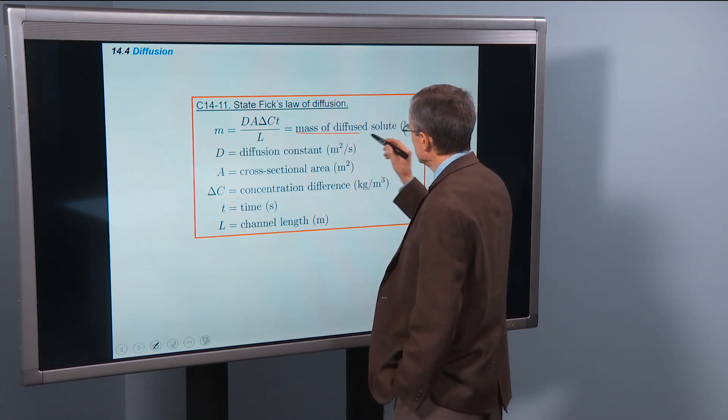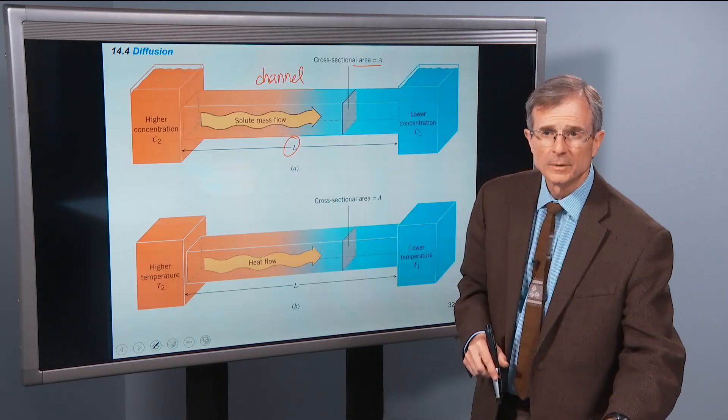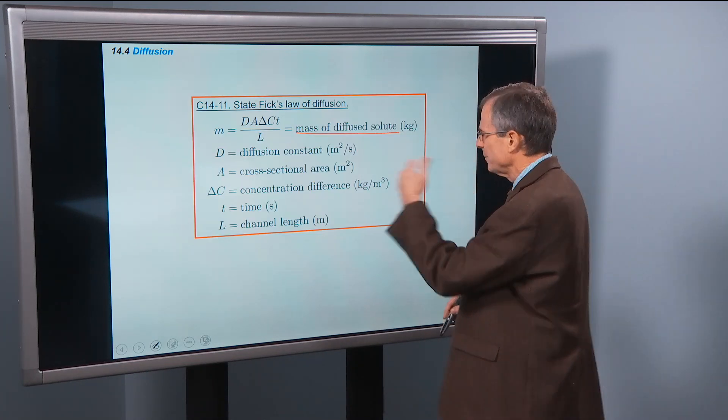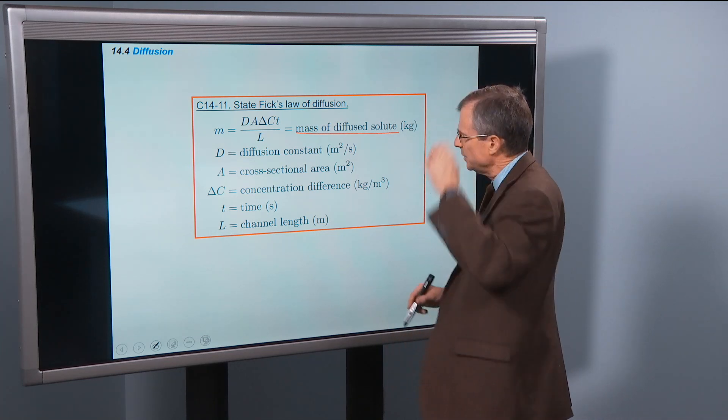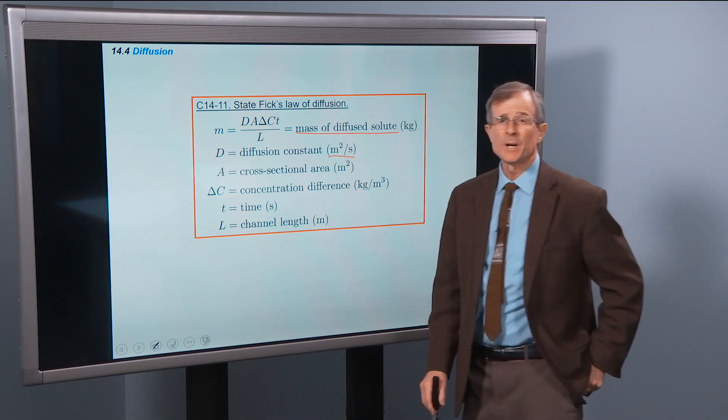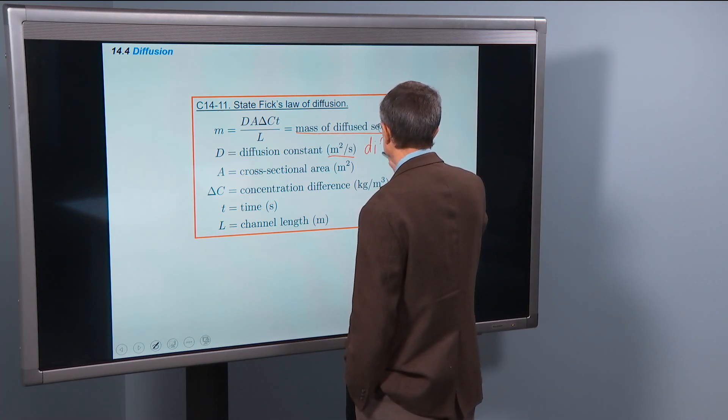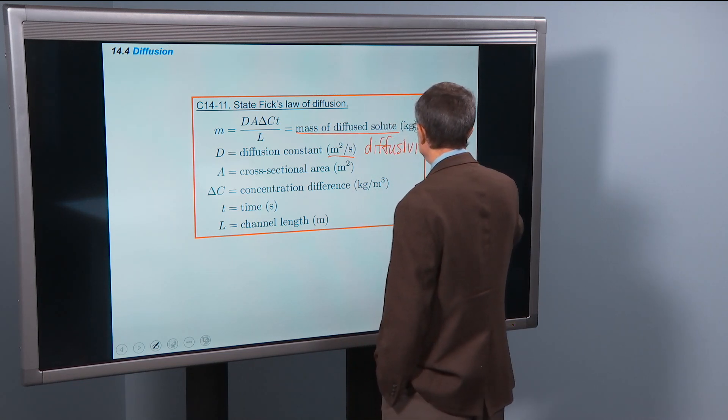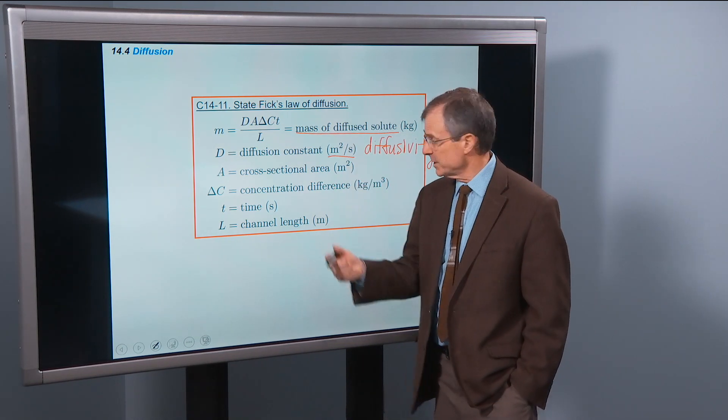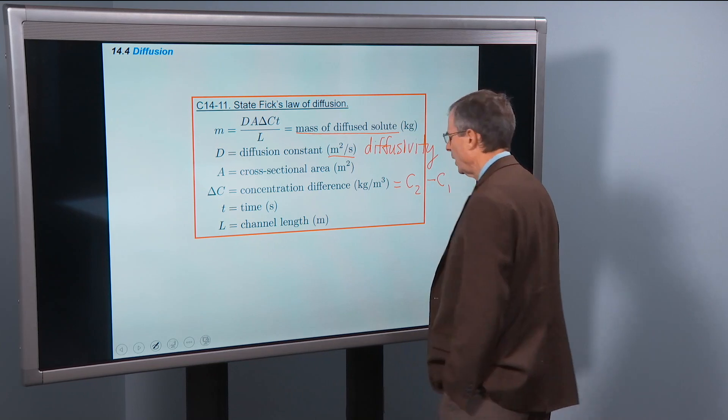So the mass of the solute that diffuses from the one side to the other, from higher concentration C2 to lower concentration C1, that's how much makes it across that channel. It depends on something called the diffusion constant, measured in meters squared per second, sometimes called a diffusivity in other contexts. We'll call it the diffusion constant. Cross-sectional area, we talked about that, measured in meters squared. The concentration difference, so this will be C2 minus C1.